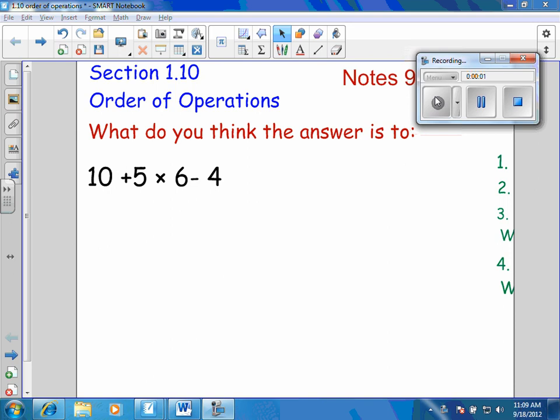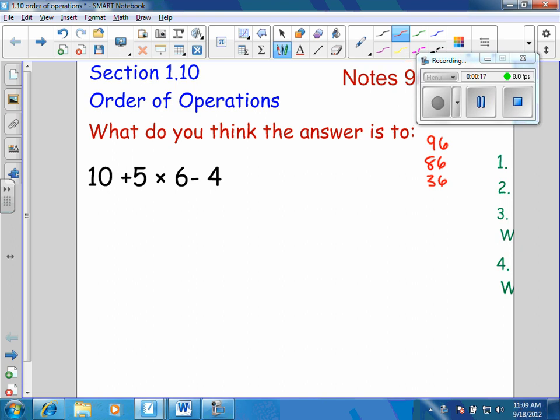Tell me an answer that you got for this. Leslie, what did you get? 90 what? MJ? Tanner? How much? If your answer's up here, put your hand down. Finn? 89? Wes?